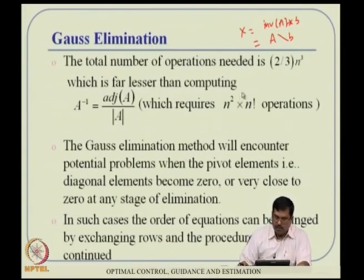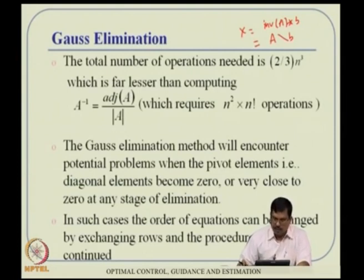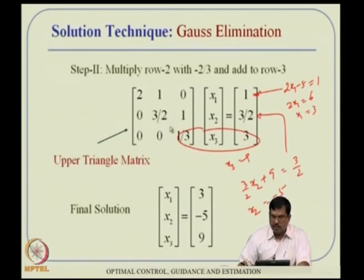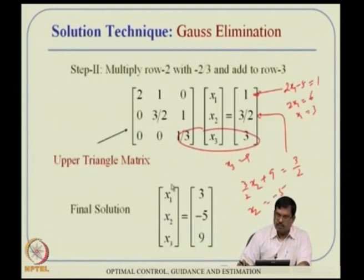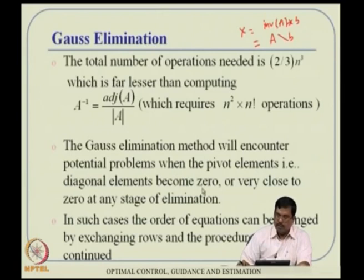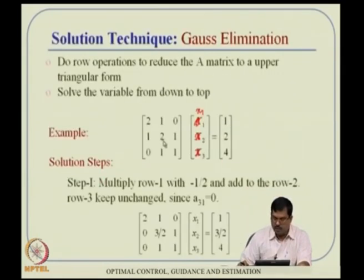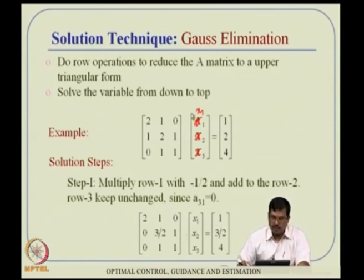However, Gauss elimination encounters problems if a pivotal element — a diagonal element — happens to be zero. No amount of multiplication, addition, or subtraction will change a zero pivot. The easy fix is to exchange rows: if the current pivot is zero, swap it with a lower row that has a non-zero element in that column, then proceed.